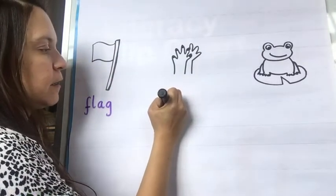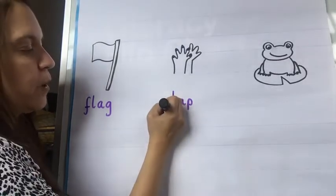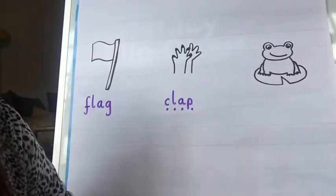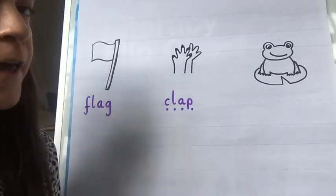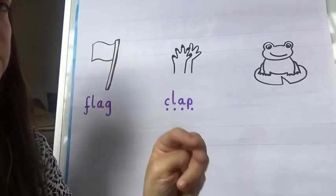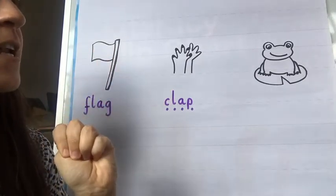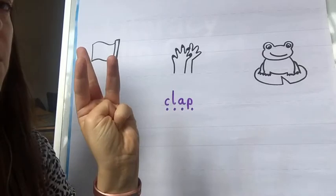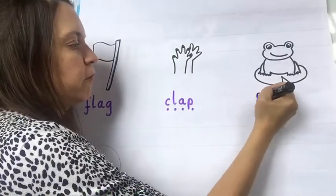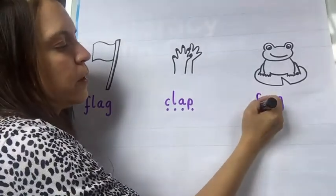And the last one is a picture of a frog. Frog. So let's get our red fingers ready. F-R-O-G. Frog. Four sounds. Let's do that again. F-R-O-G. Frog. I'm going to write those sounds. F-R-O-G. Frog.